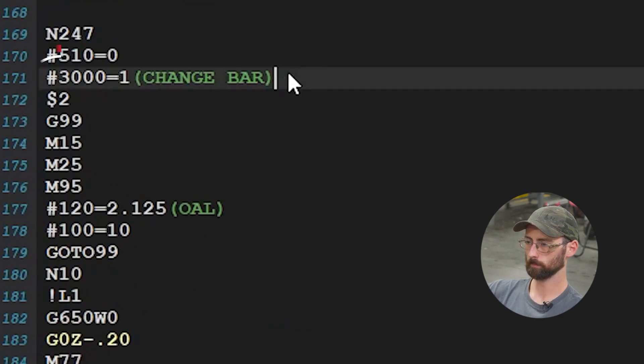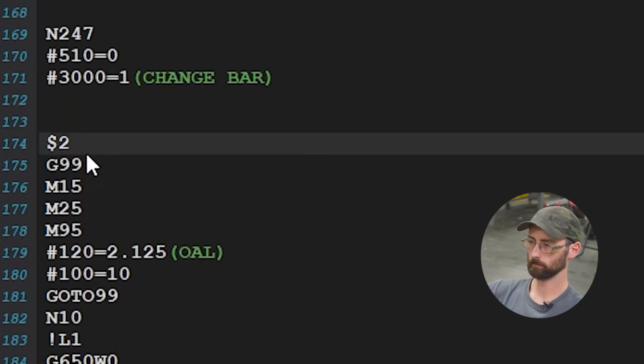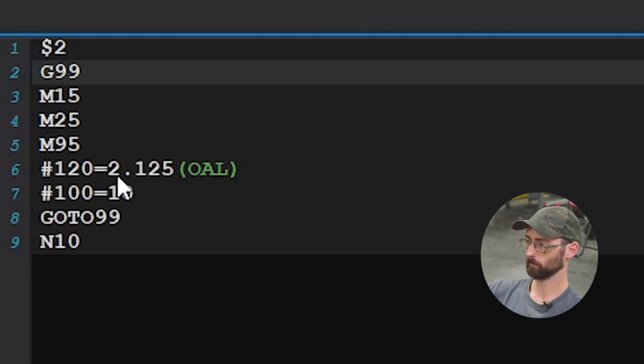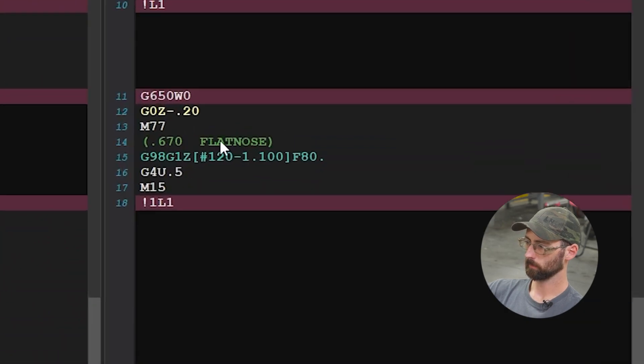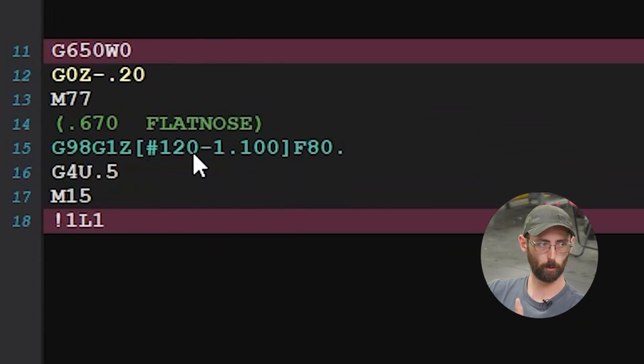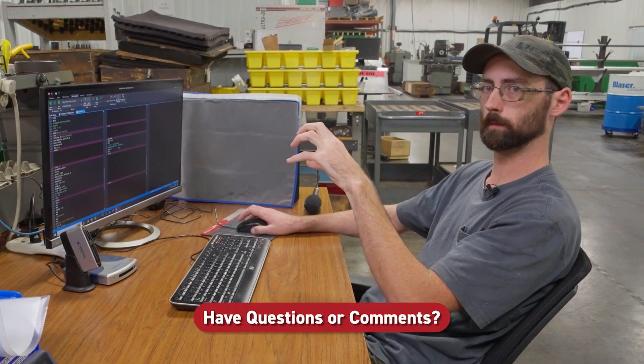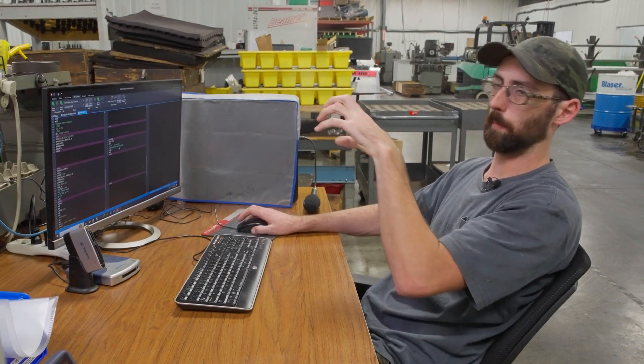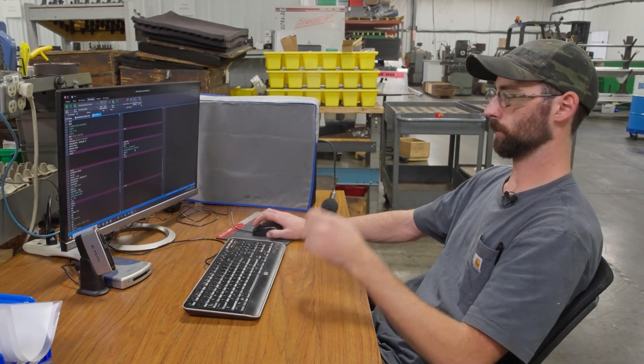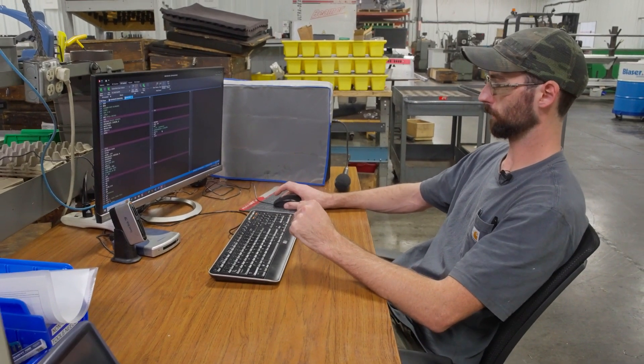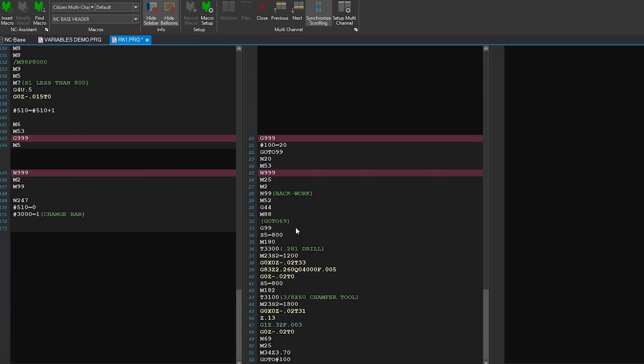We're on the subspindle here, side two. We're defining #120 again, and we have #100 equals 10. #120 is our overall length, 2.125 minus 1.1. We're using this to set our pickoff approach distance - overall length of the part minus 1.1 inches. Rather than just setting an absolute value, we're making it do math. It makes life easier.